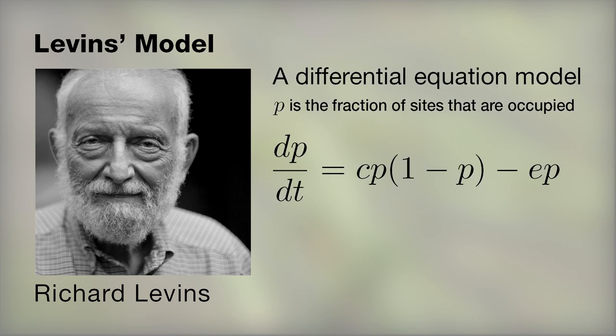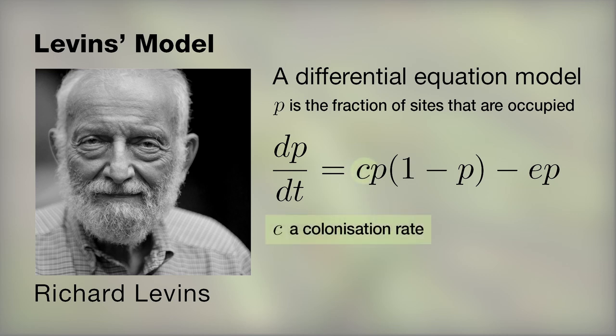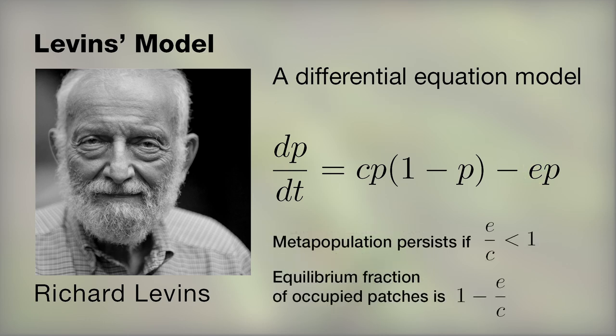Metapopulation modelling really started almost 50 years ago with a paper produced by Levins. That model was a differential equation model that had two components: the rate at which patches become colonised, and a rate at which patches become extinct. This model was very simple, based on assuming that colonisation rate is the same for every patch, and the extinction rate is the same for every patch. The only factor really varying was that the colonisation rate depended on how many other patches were currently occupied.